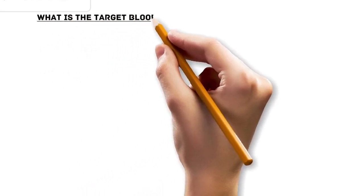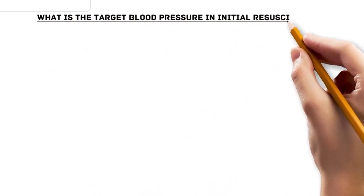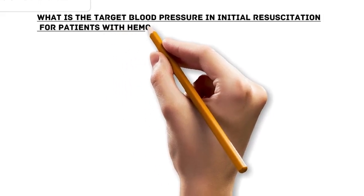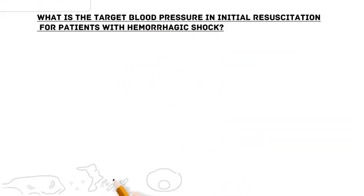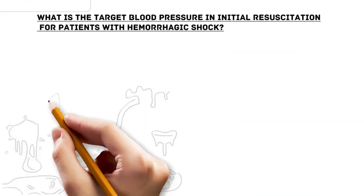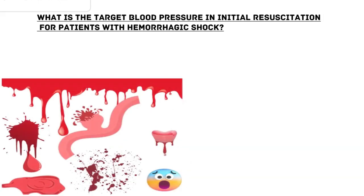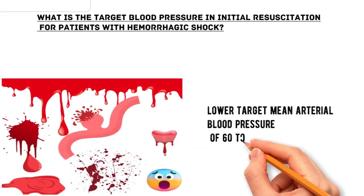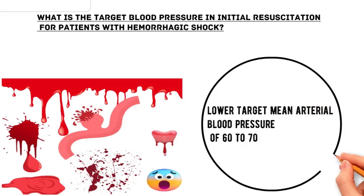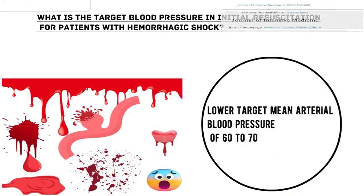What is the target blood pressure in initial resuscitation for patients with hemorrhagic shock? For patients with hemorrhagic shock, we suggest a relatively lower target mean arterial blood pressure of 60-70 mmHg for initial resuscitation — grade 2+, weak recommendation.